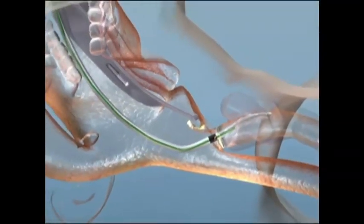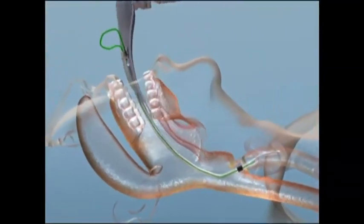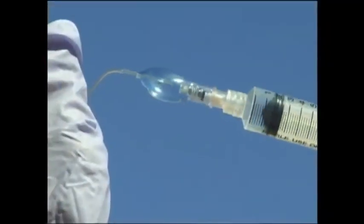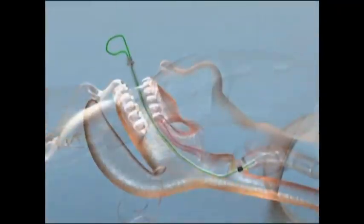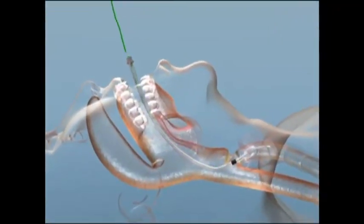Gently withdraw the laryngoscope blade from the mouth and inflate the distal cuff with 5 to 10 cc's of air. Remove the stylet from the endotracheal tube.